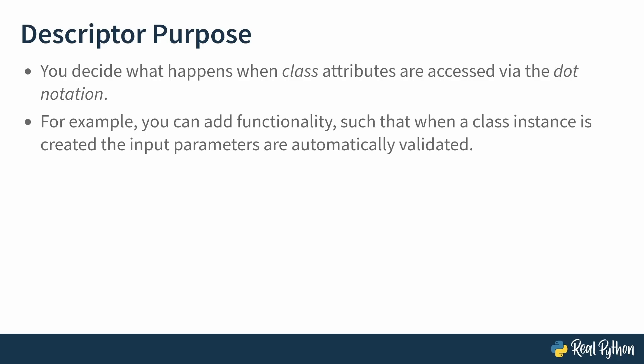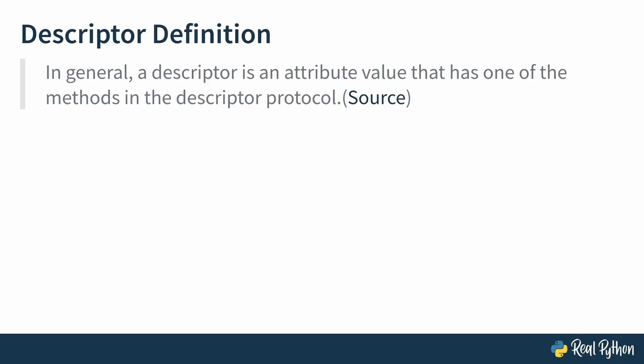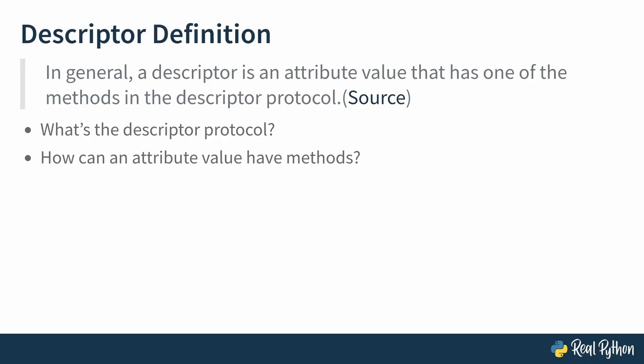Before you can start coding, though, you'll need to study the definition first. According to the official documentation: in general, a descriptor is an attribute value that has one of the methods in the descriptor protocol. That raises two questions. One, what's a descriptor protocol? And secondly, how can an attribute value have methods? I'm aware of classes having methods, so if my attribute value is a class or a class instance, it can have methods. That might sound a little bit confusing at the moment, but don't worry — at the end of the lesson there's a clear example of what that exactly means. But for now, let me talk you through the descriptor protocol.